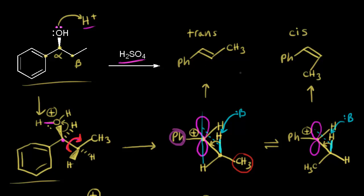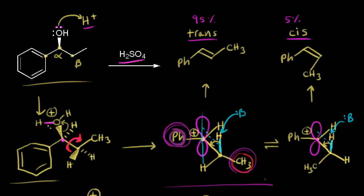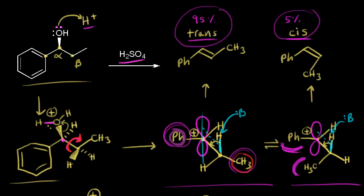Now that we've identified the products, let's explain why this reaction is stereoselective. We form two stereoisomers: the trans isomer, which is about 95% of the product, and the cis isomer, which is only about 5%. The conformation leading to the trans product has the bulky phenyl and methyl groups relatively far apart — decreased steric hindrance. The conformation leading to the cis product has these two bulky groups close together, which destabilizes it. The trans product is more stable and forms preferentially, which is why this reaction is stereoselective.